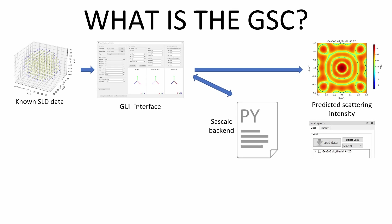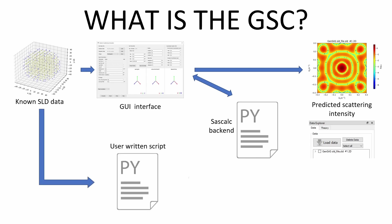For more complex operations, user-written Python scripts can interface with the backend to produce results the GUI could not. An example of this to calculate orientational averages is shown later.